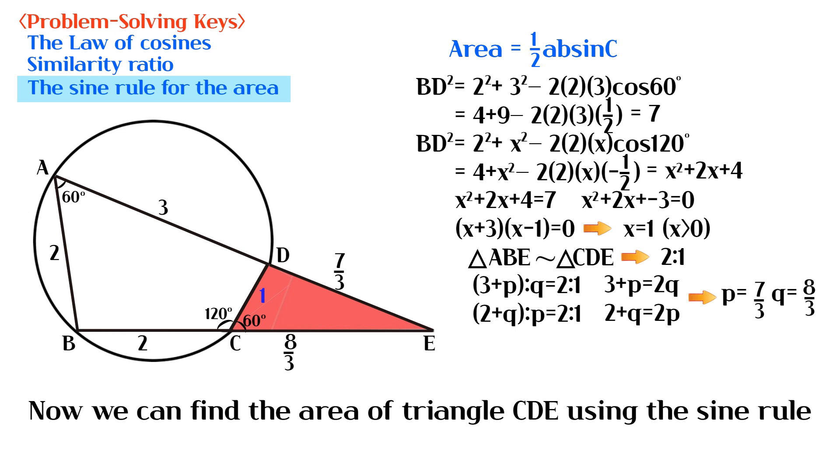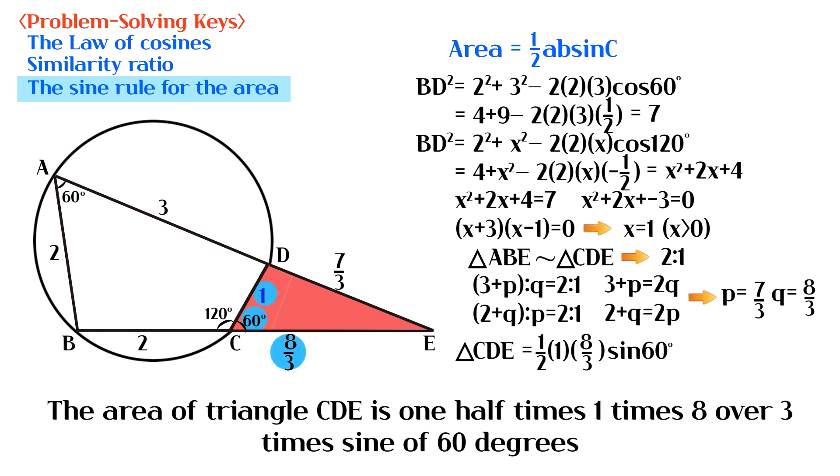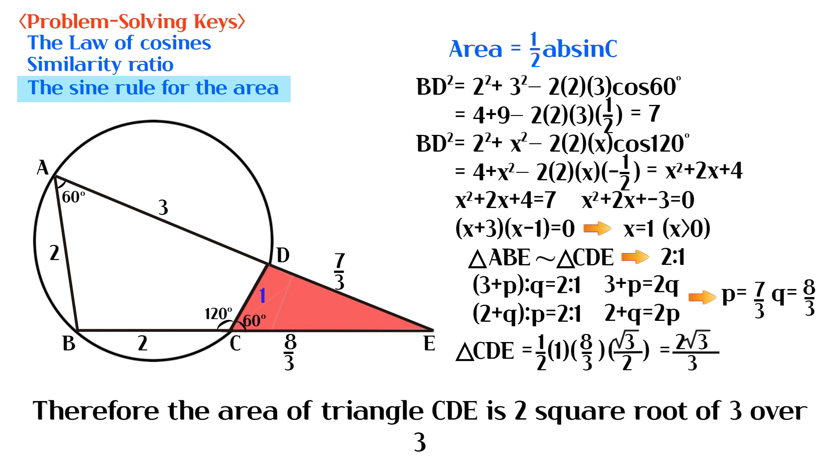Now we can find the area of triangle CDE using the sine rule. The area of triangle CDE is 1 half times 1 times 8 over 3 times sine of 60 degrees. Therefore the area of triangle CDE is 2 square root of 3 over 3.